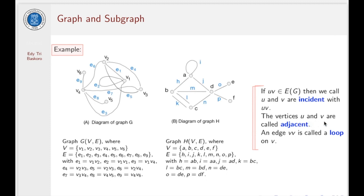The vertices U and V are called adjacent if UV is an edge. So again, this is one of the examples. B is adjacent to D because we have an edge here. But B is not adjacent to E because there is no edge from B to E.